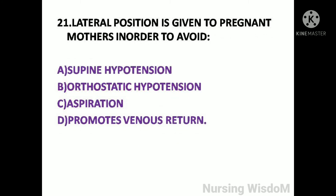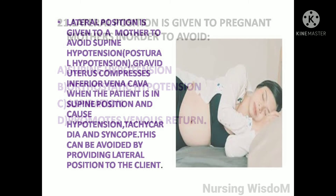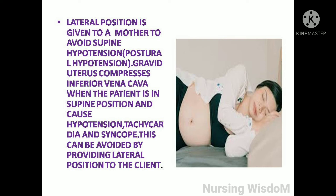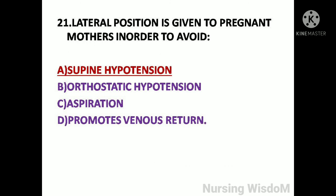Next question: Lateral position is given to pregnant mothers in order to avoid — option A: supine hypotension; option B: orthostatic hypotension; option C: aspiration; option D: promotes venous return. Lateral position is given to a mother to avoid supine hypotension or postural hypotension. The gravid uterus compresses the inferior vena cava when the patient is in supine position and causes hypotension, tachycardia, and syncope. This can be avoided by providing lateral position to the client. So here the answer is option A, supine hypotension.